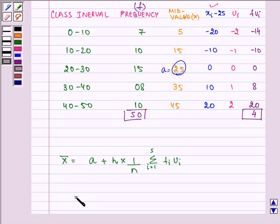Now, we need to substitute the value of a is 25, that we have assumed. h is the number by which we have divided xi minus 25, that was 10, into 1 upon n, that is 50, into summation of fi ui, that is coming out here as 4.